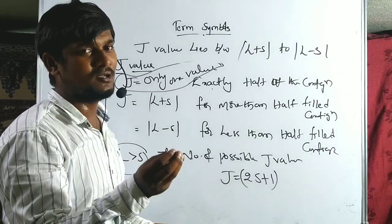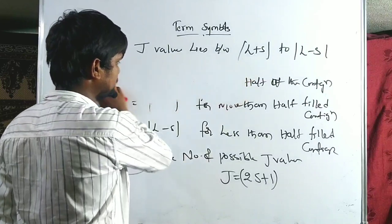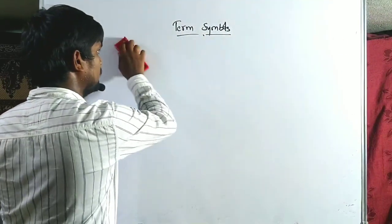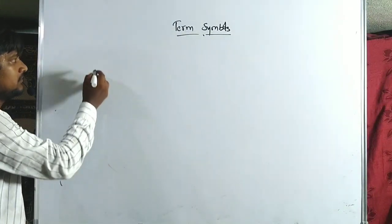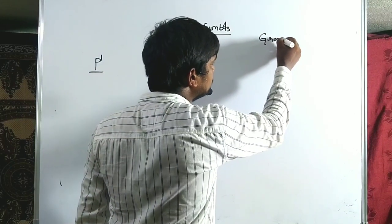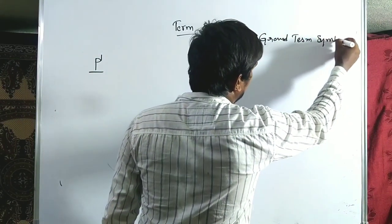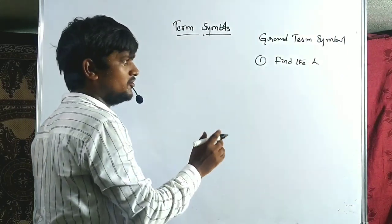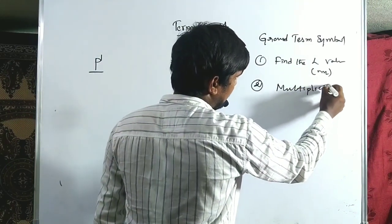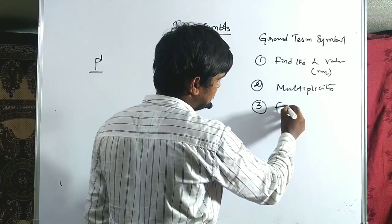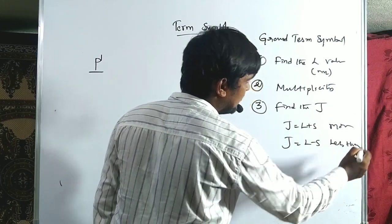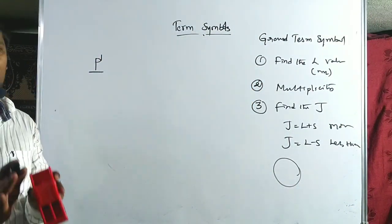The rules to find the ground term symbol are: first, find the L value using ML; second, find the spin multiplicity; third, find the J value — J = L+S for more than half-filled, J = L−S for less than half-filled. Then combine all terms into one representation. That is called the ground term symbol.